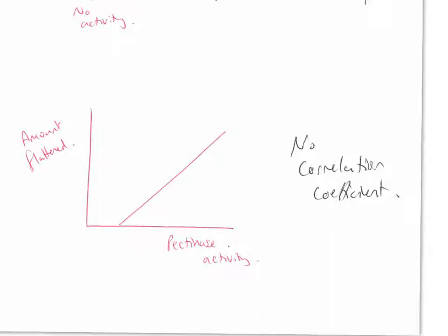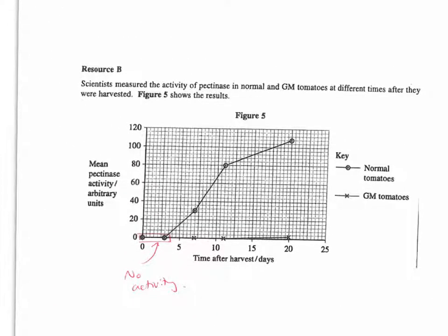Another thing that you might have spotted is that up to 12 days, there's no pectinase activity in GM. But if you look at the other graph, after three days, there is a slight increase in the amount that the tomatoes are flattened, suggesting that it's not just pectinase that's causing the effect of ripening.